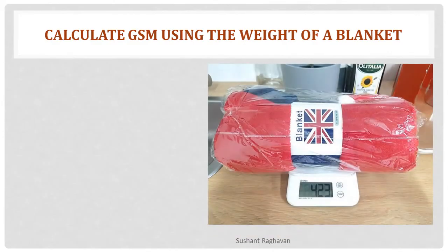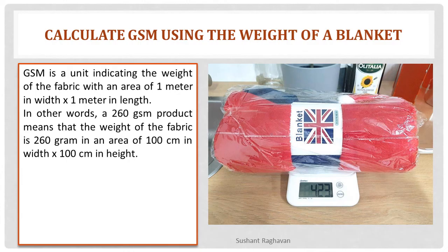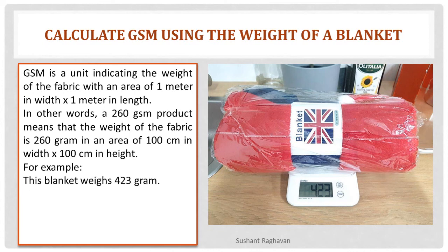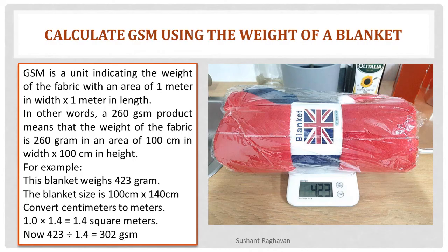Calculate GSM using the weight of a blanket. GSM is a unit indicating the weight of fabric with an area of 1 meter in width × 1 meter in length. In other words, a 260 GSM product means the fabric weighs 260 grams in an area of 100 cm × 100 cm. For example, this blanket weighs 423 grams and the blanket size is 100 cm × 140 cm. Converting to meters: 1 × 1.4 = 1.4 square meters. Therefore, 423 ÷ 1.4 = 302 GSM.